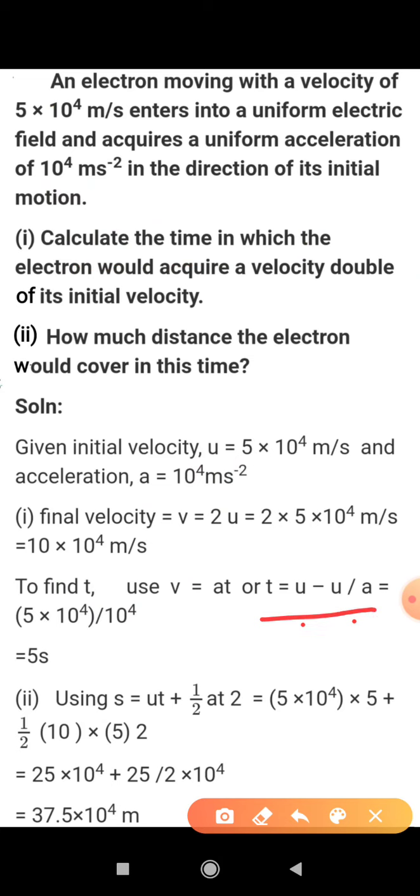t will be equal to v minus u upon a. When u comes to this side, this will be v - u = at, so t = (v - u)/a. You will place the values and get the answer. This 10⁴ cancels with 10⁴ and the answer is 5 seconds.